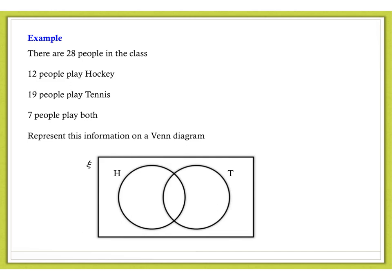So, we're going to do an example of calculating probabilities using a Venn diagram. Have a look at this example. You can have a go yourself at filling in the Venn diagram and then see if you got the answers correct. There are 28 people in a class. 12 of them play hockey. 19 of them play tennis. And 7 play both.